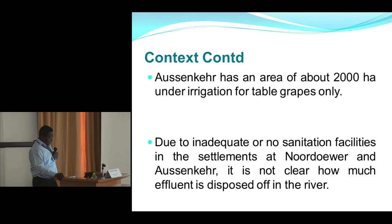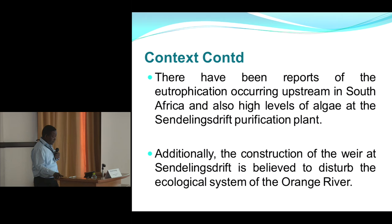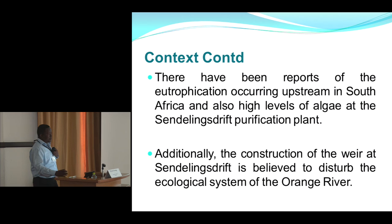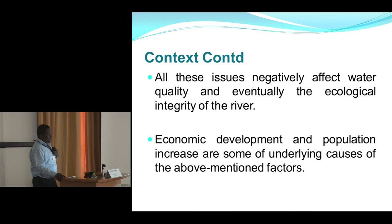Another issue with this river is sanitation — there is no information on how much wastewater is disposed into the river, and sanitation facilities are present in some places but inadequate in others. Reports suggest eutrophication at drinking water treatment plants and upstream in South Africa. The river is also under regulation due to weir construction, which will affect the ecological system. Broadly, all these causes arise from economic development and population growth.